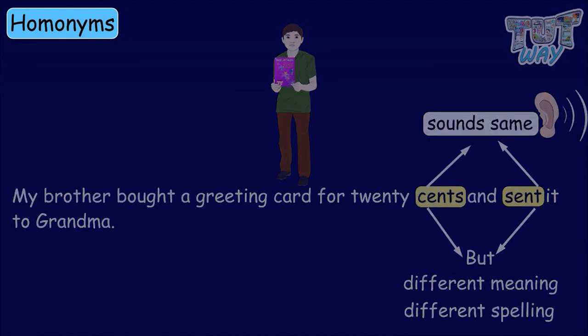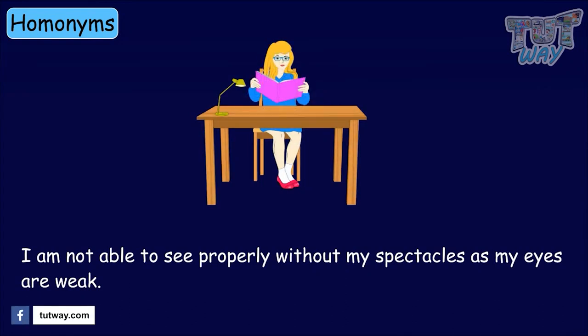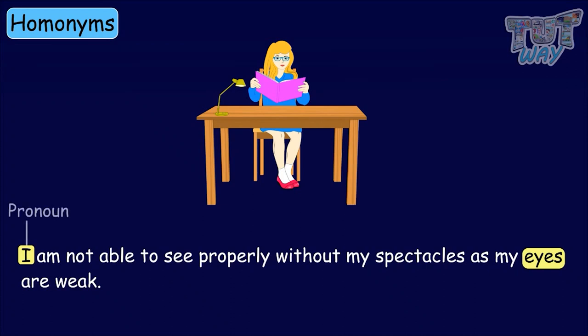I am not able to see properly without my spectacles, as my eyes are weak. Here again, we have homonyms I and eyes — one is a pronoun, and the other is a naming word or noun.